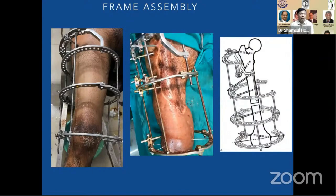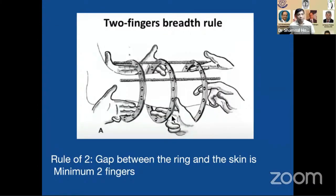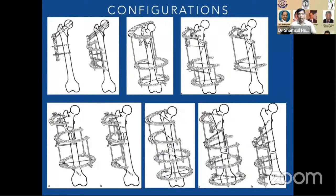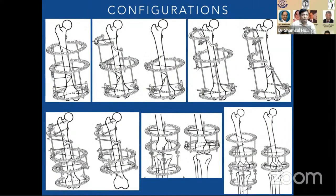This is a normal frame assembly using arches, hinges, and oblique support. The first case was a lengthening case, so no pins were applied in between. The second case was a bony injury — pins on the proximal and distal parts and wires in the lower part. Always remember the two-finger breadth rule: after applying the ring there should be a minimum gap of two fingers to avoid skin impingement. These are the usual configurations for all femoral ring applications — proximal femur, subtrochanteric, mid-shaft, for fracture, for the condylar area — adding tibial bell rings to stabilize the joint.